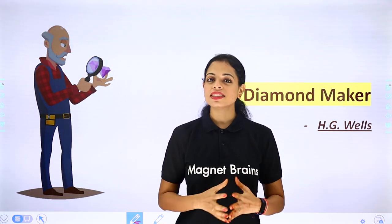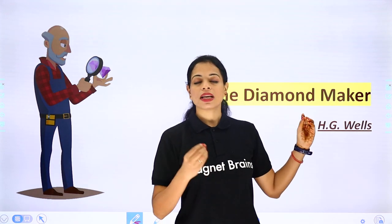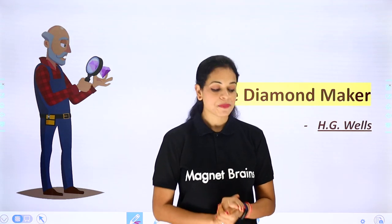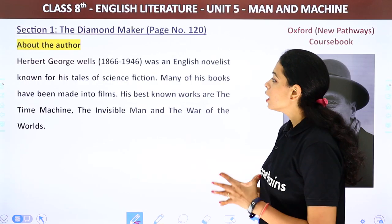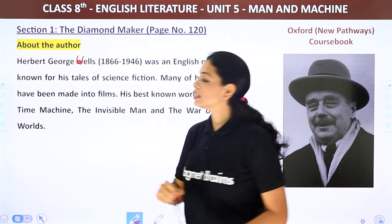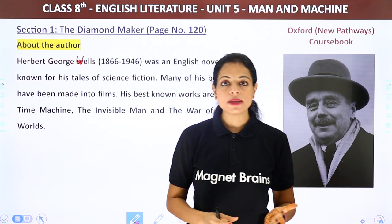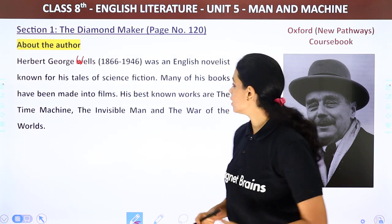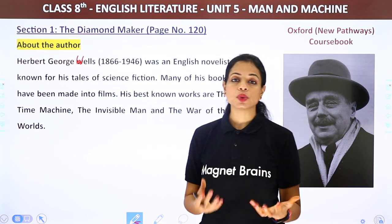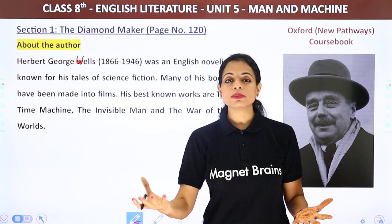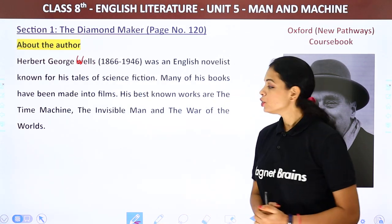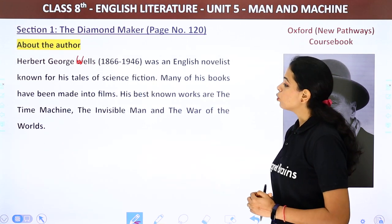Let's start this video where we will first understand and read something about our author H.G. Wells, and then we will jump to our story. Herbert George Wells was an English novelist known for his tales of science fiction. Many of his books have been made into films. His best known works are The Time Machine, The Invisible Man, and The War of the Worlds.